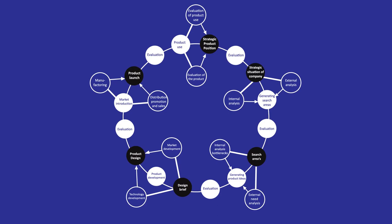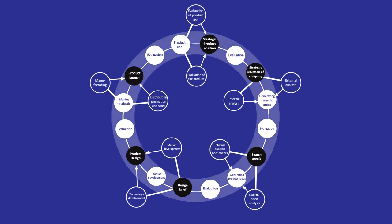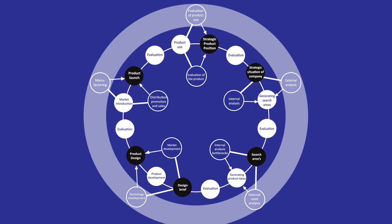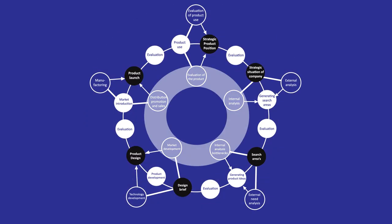We define innovating as making leap-like changes in product-market technology combinations, by a company or a consortium of companies, to gain sustainable competitive advantage. Therefore the model covers three separate but intertwined spheres: the product sphere, the market sphere and the technology sphere.